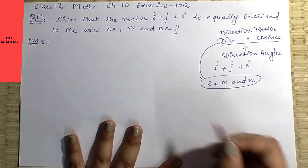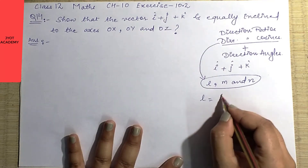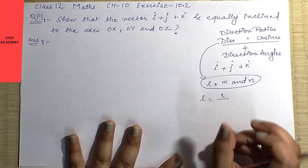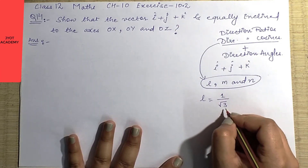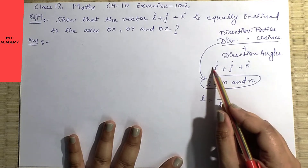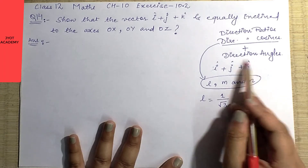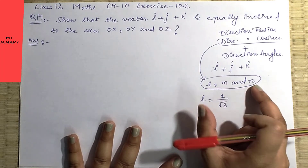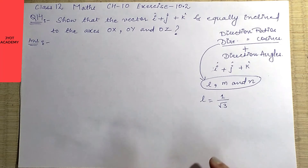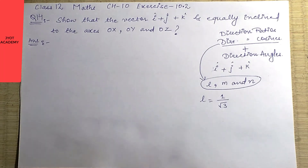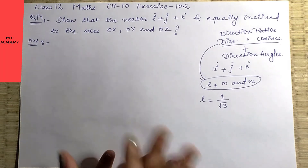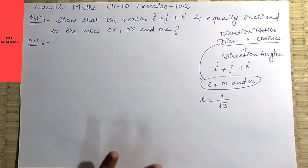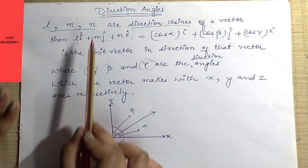Suppose we have the vector i + j + k. You know the direction ratios. From those, the values l, m, and n — which we call direction cosines — are derived. For this vector, the value of l comes out as 1 over the magnitude, which is root 3. So l = 1/√3.